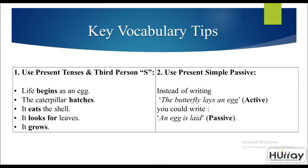Here are three vocabulary tips for this type of question. First, use present tenses wherever required and the third person -s. For example, 'life begins as an egg.' Remember this is a continuous, unending process, so use present tense phrases like 'the caterpillar hatches' or 'it eats the shell' rather than past tense forms. Second, you could use the simple present passive tense. Instead of writing 'the butterfly lays an egg' (active), write 'an egg is laid' — this puts more focus on the stage rather than the butterfly.